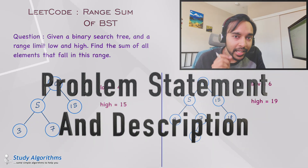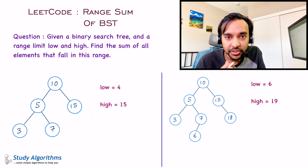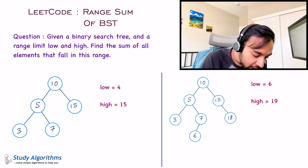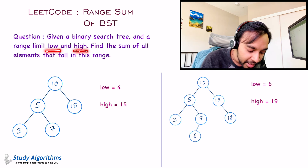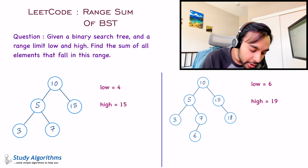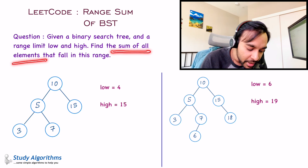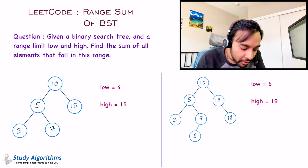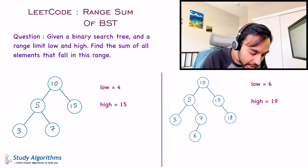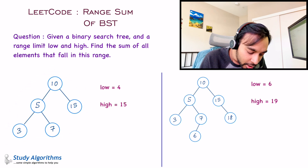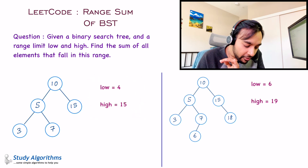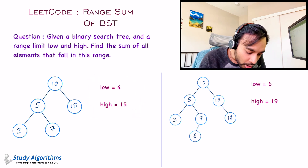First of all, let us make sure that we are understanding the problem statement correctly. You are given a binary search tree and you are given a range — low and high. What you need to do is find the sum of all the elements that fall in this range. Let us try to relate this problem with one of our test cases. This is our binary search tree and these are the two ranges — 4 and 15. We have to find the sum of all the elements in this tree that are between this range.